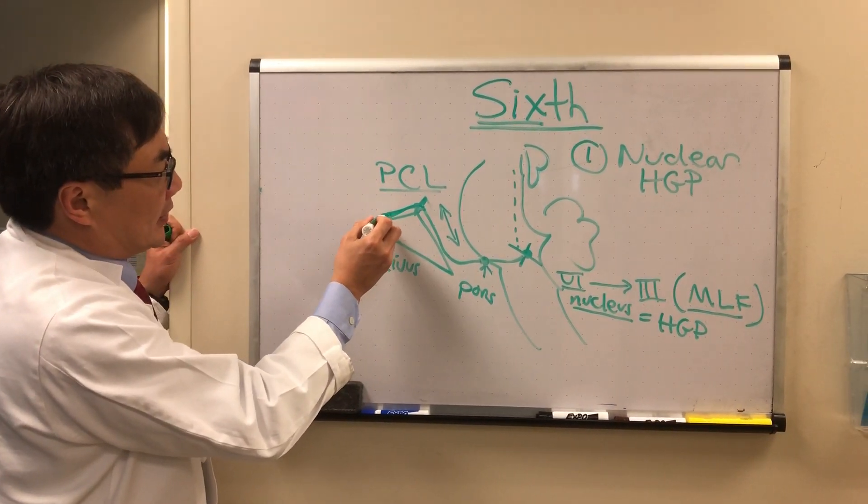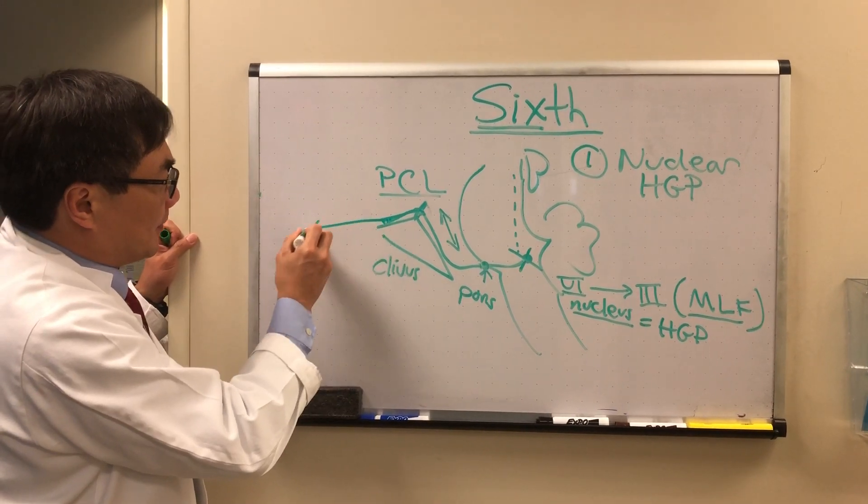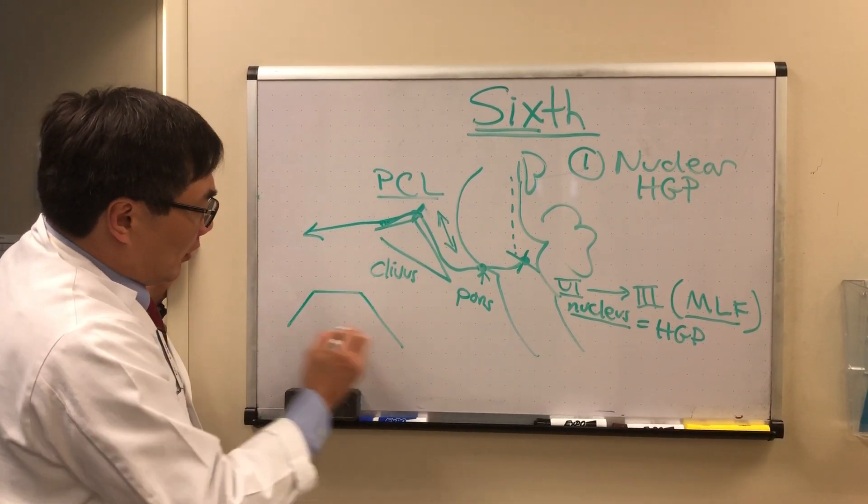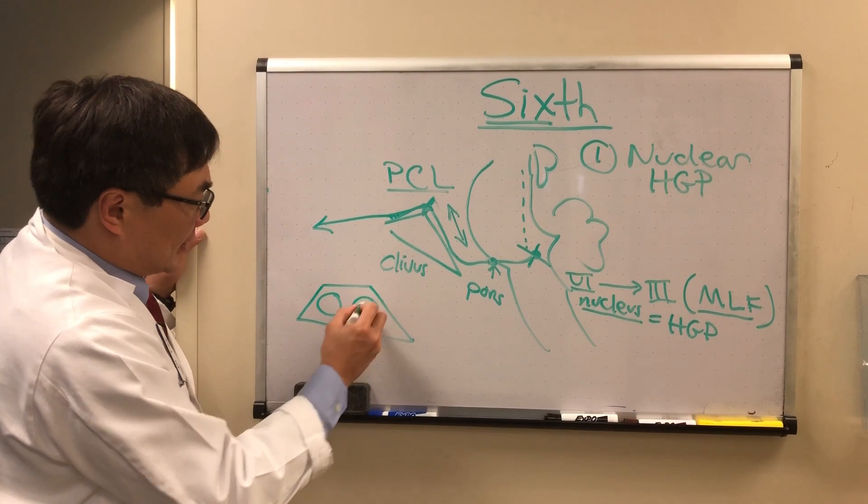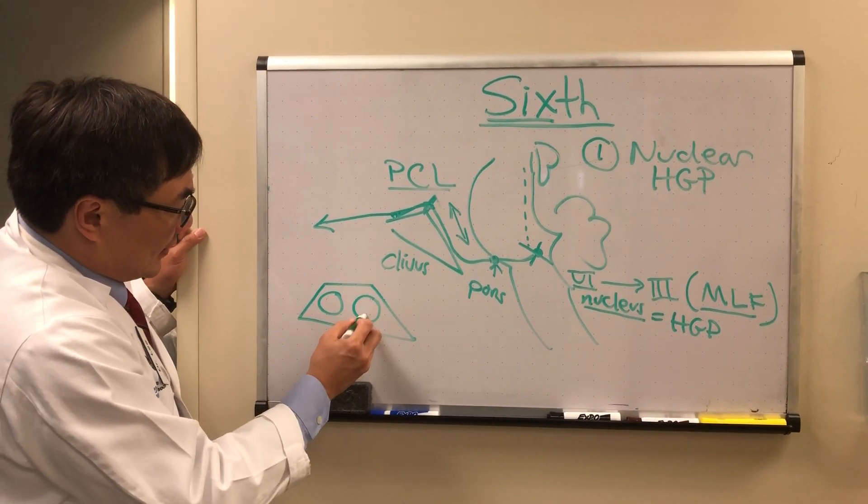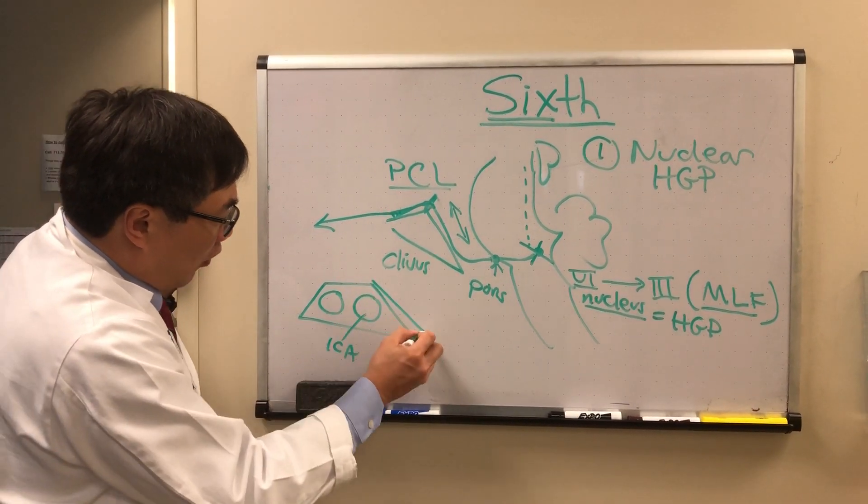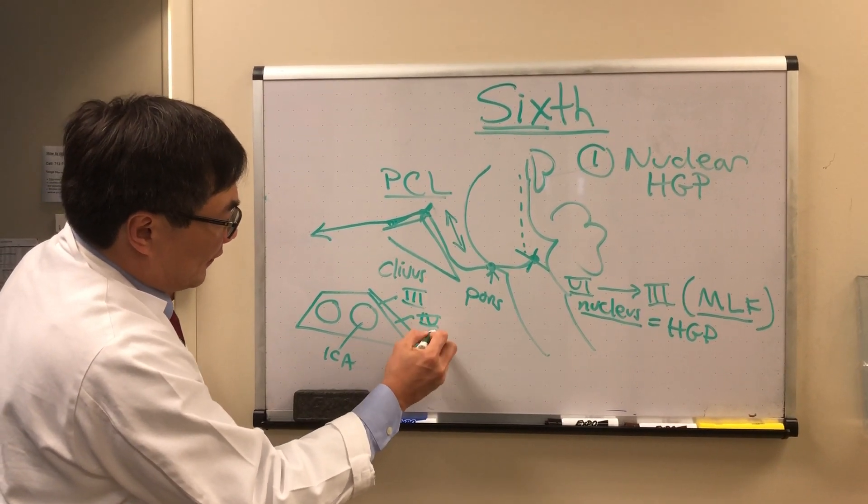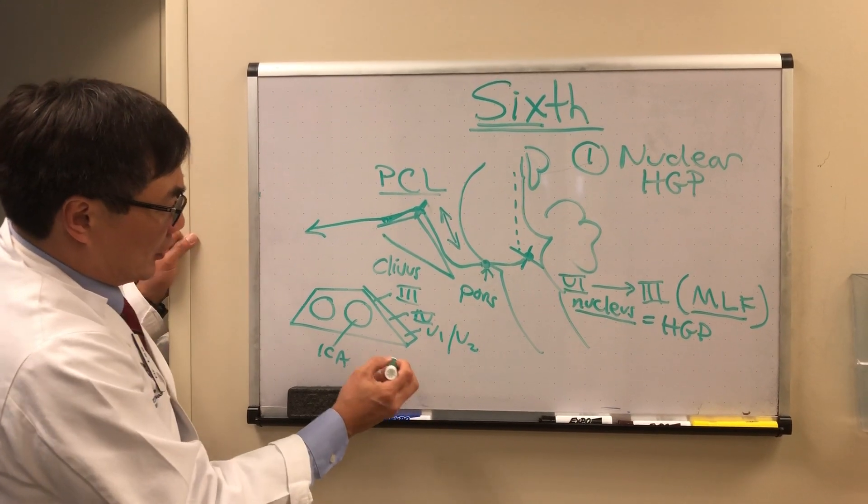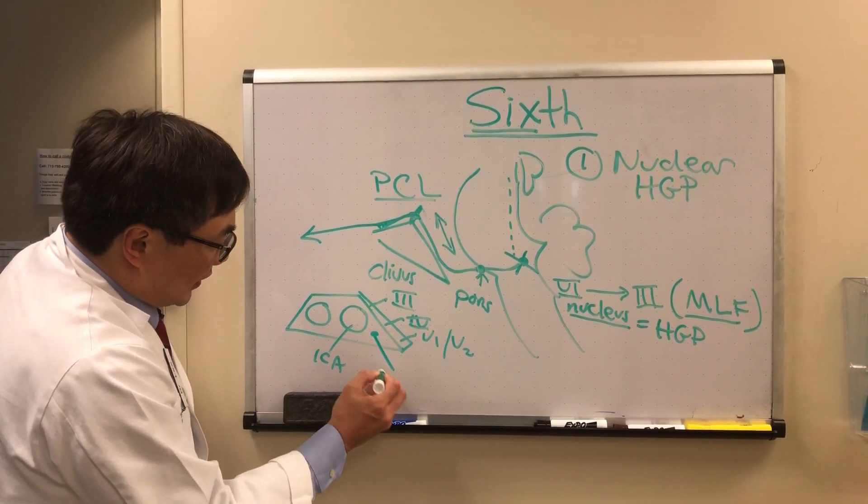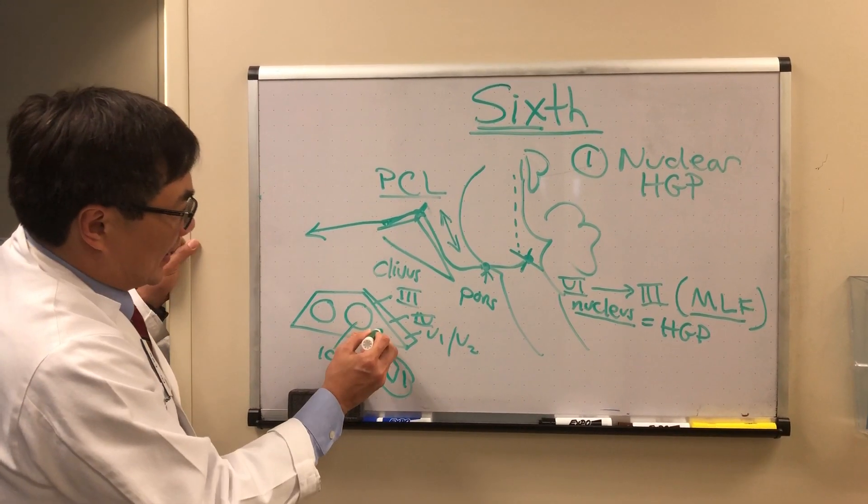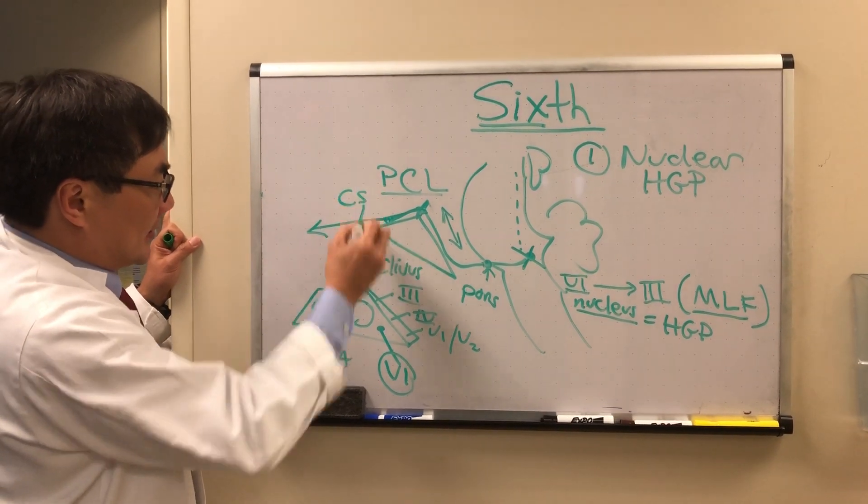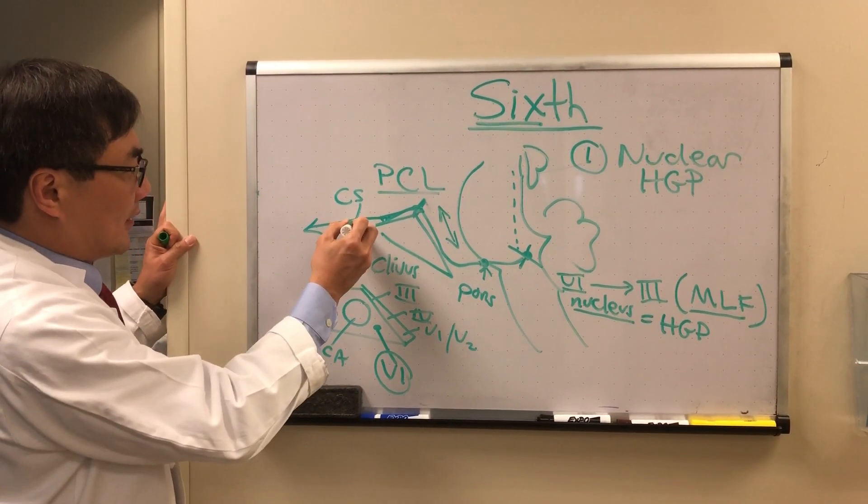As the sixth nerve makes the bend here, it enters into the substance of the cavernous sinus rather than the wall. So in coronal cross-section, this is the cavernous sinus, this is the internal carotid artery. In the wall of the cavernous sinus are three, four, five subdivision one, and a little bit posterior V subdivision two. But the sixth nerve lives in the substance of the cavernous sinus.